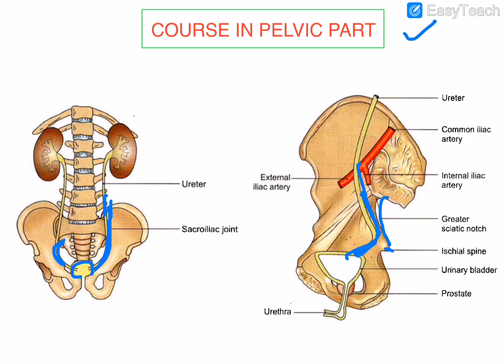The ureter then turns forward and medially to reach the base of the urinary bladder. This is the oblique part of the ureter in the pelvis. Inside the urinary bladder, some part of the ureter is also present, which is called the intravesicular part. In the next session, we will discuss the normal constrictions of the ureter and the urinary bladder.